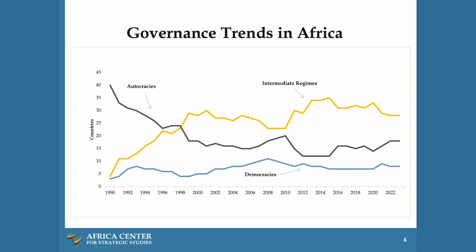The question is not really whether autocracy or democracy is better — that answer is clear. Democracies provide a superior governance model. The question really is how to make democracies better, how to make them more effective. This is especially important since 75% of African citizens regularly report to Afrobarometer that they prefer democracy over any other form of government.